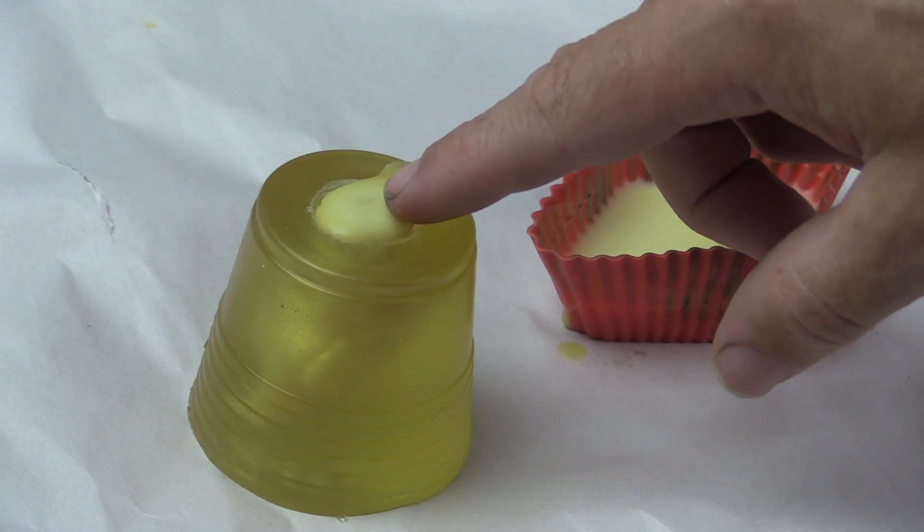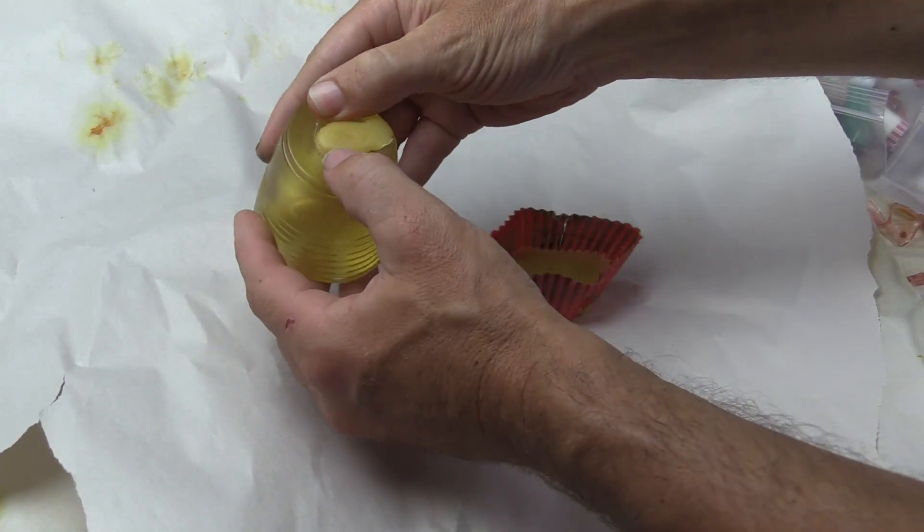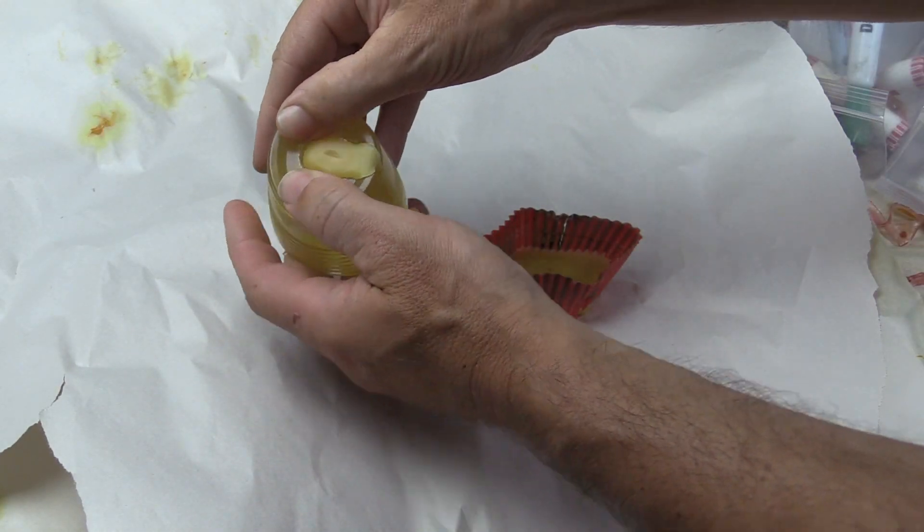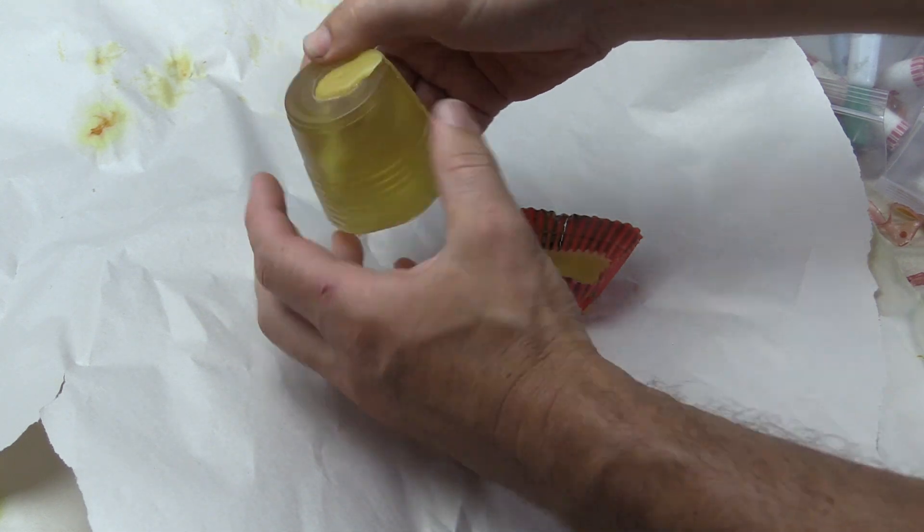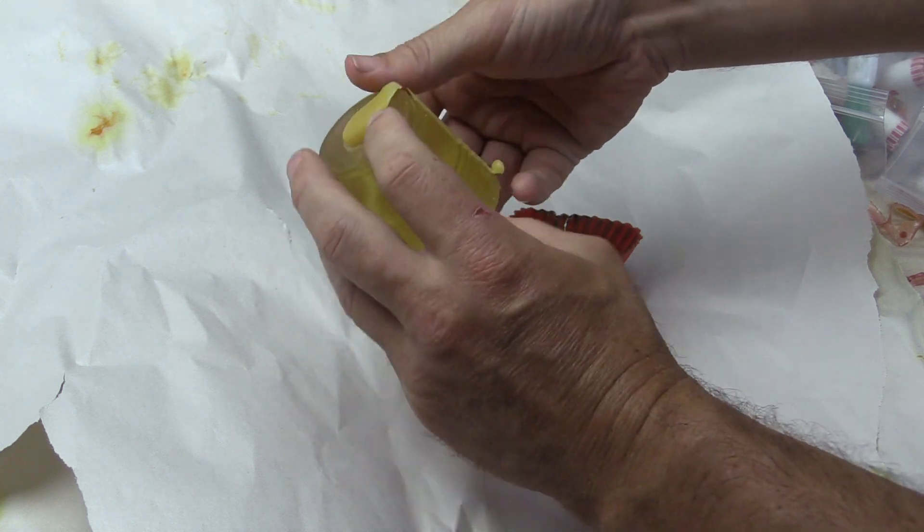I let this beeswax cool so it is on the edge of solidifying again before I pour it back into the ComposiMold mold. The wax will cool from the outside in so it will chill to the correct shape. I carefully remove it from the ComposiMold mold.